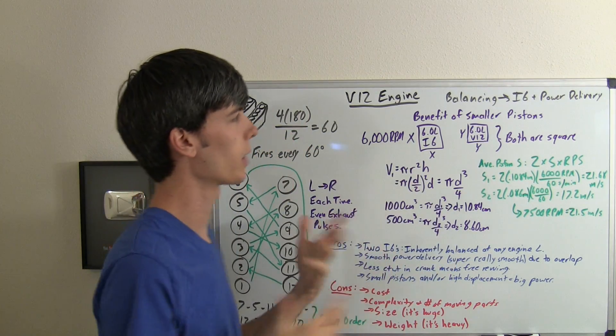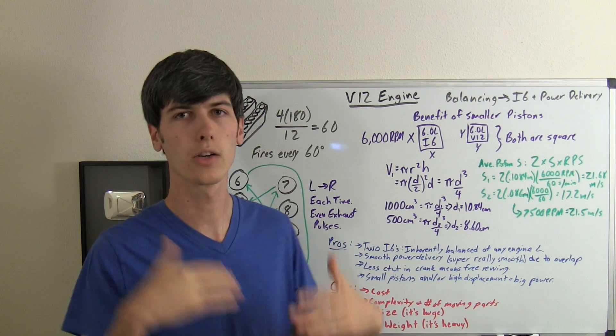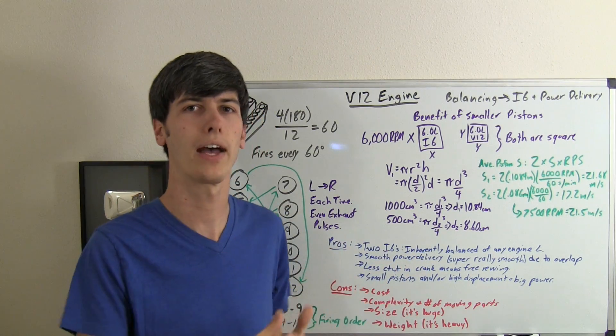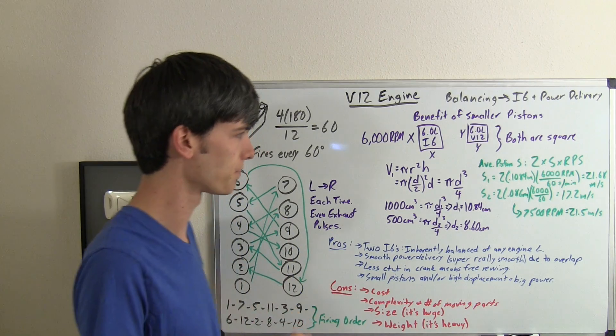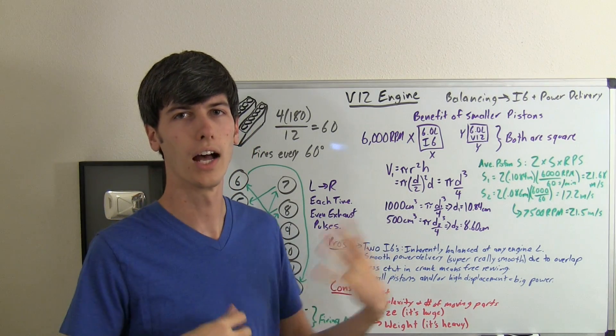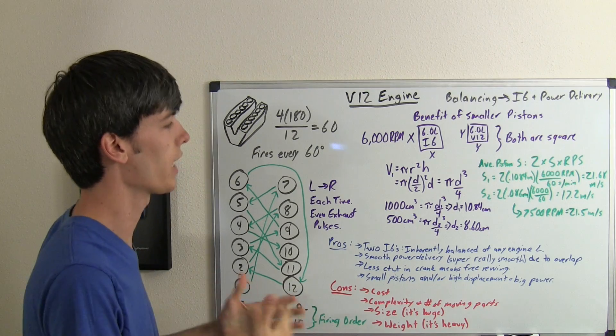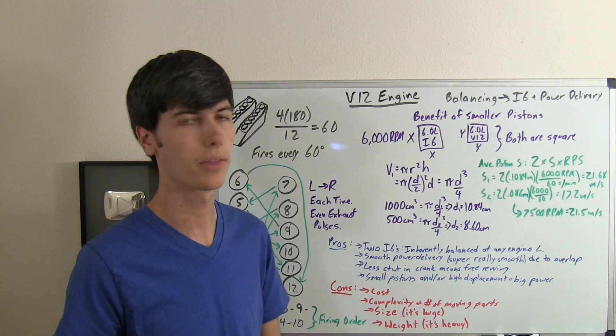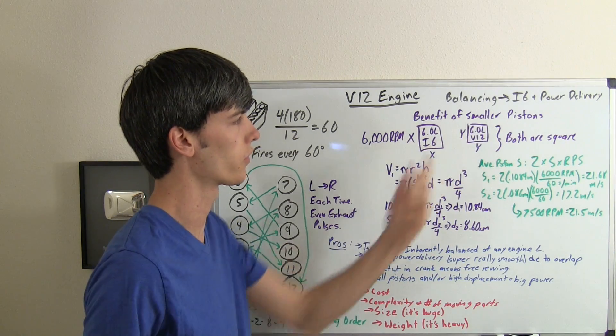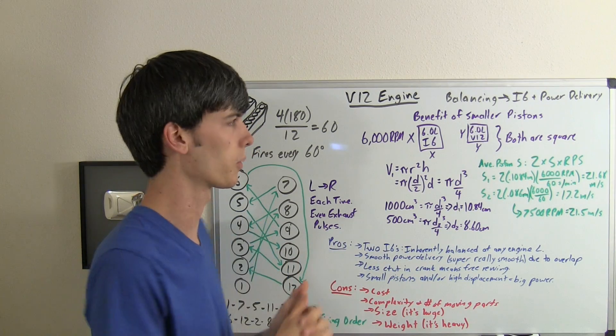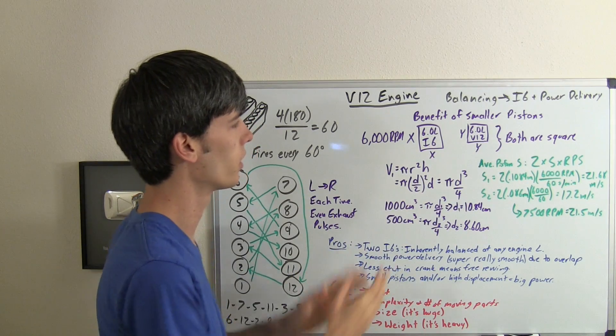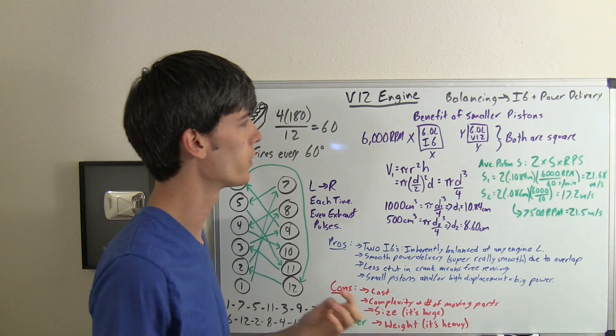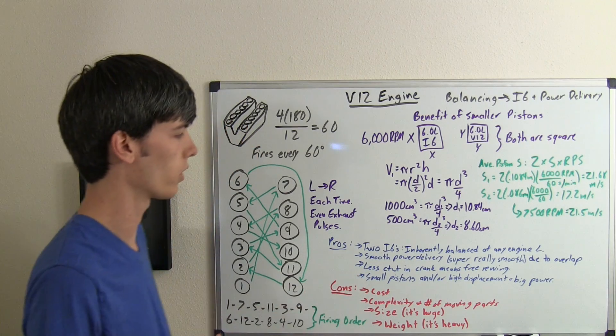So basically what I'm saying is by using smaller pistons, you can increase the limitation of how fast you can rev your engine. So that's one of the benefits of these V12 engines, is you can make them fairly high revving if you want to. Now you can do the same thing with other engines and simply just decrease the stroke. But then you're going to be decreasing the displacement. So that's why I kind of did this back-to-back comparison of one engine versus another engine based on the layout alone.